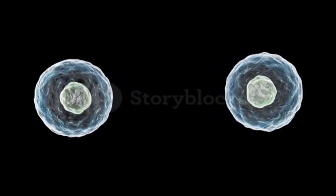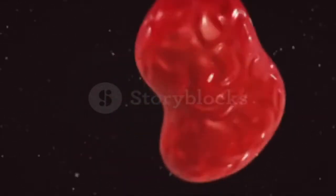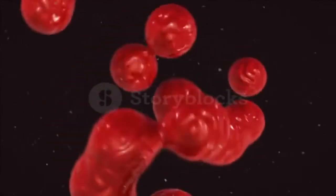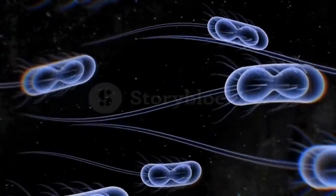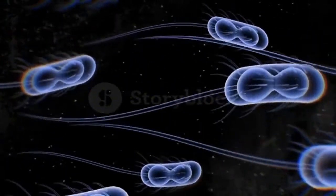In both prokaryotic and eukaryotic cells, the outcome of cell reproduction is a pair of daughter cells that are genetically identical to the parent cell. In unicellular organisms, daughter cells are individuals.